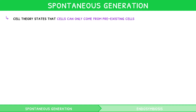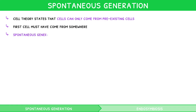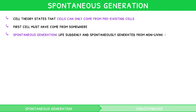As mentioned in our second IB Biology Topic 1 video, the cell theory states that cells can only come from pre-existing cells. But like the chicken and the egg, the first cell must have come from somewhere. At one point in time, many individuals believed in the concept of spontaneous generation to explain this phenomenon — that life suddenly and spontaneously generated from non-living matter.